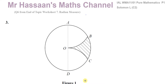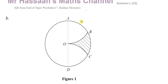This question is taken from Solomon L, the C2 collection, not the C1 collection. It's question number 3 from the Solomon C2 collection, Solomon L, and it's question number 6 from my end-of-topic worksheet, which is about radian measure from Chapter 7.